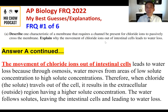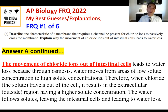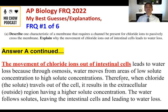For the second part of 1A: the movement of chloride ions out of intestinal cells leads to water loss because through osmosis, water moves from areas of low solute to high solute concentration. When chloride ions travel out of the cell, the extracellular region has higher solute concentration, so water follows the solutes, leaving the intestinal cells and leading to water loss.